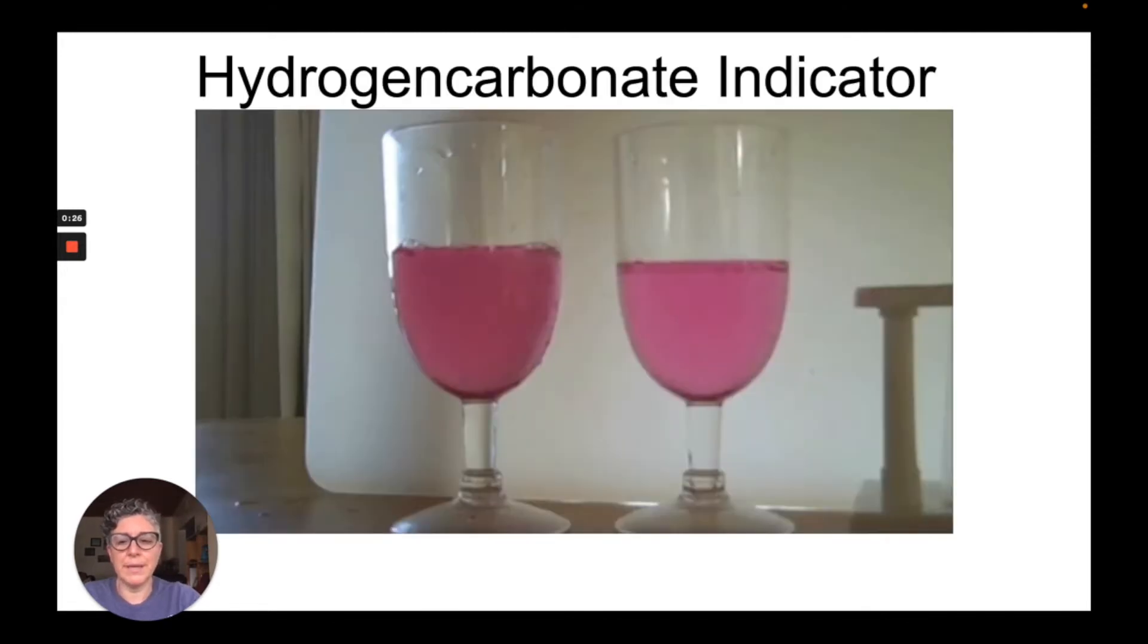Before we get started with the actual experiment, we're going to take a look at what happens with the indicator that we use with this experiment. The indicator we use is called hydrogen carbonate indicator and under normal conditions it has this pinkish almost orangey color.